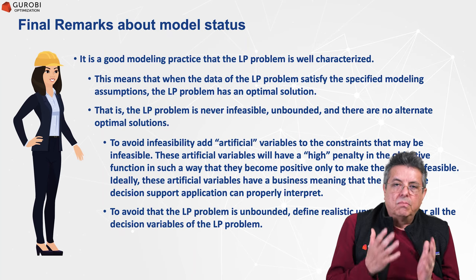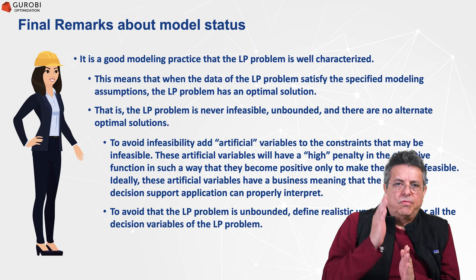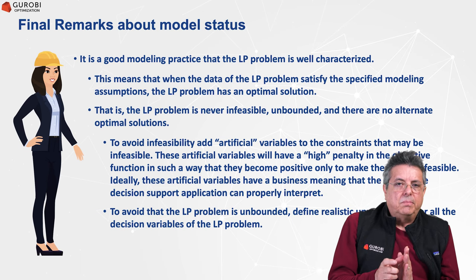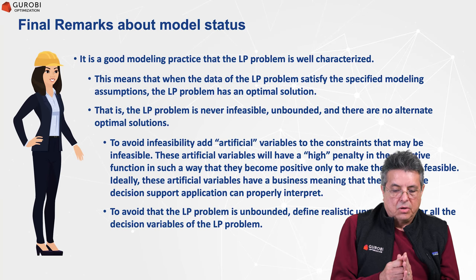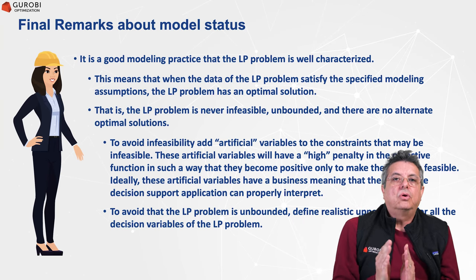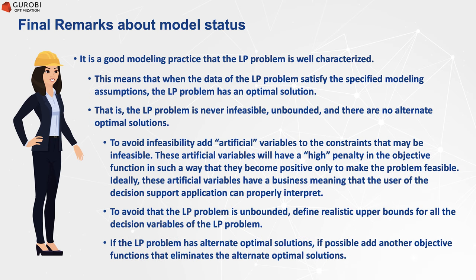To avoid an unbounded problem, define an upper bound for each decision variable, since realistically no decision variable can take an arbitrarily large value. To avoid alternative solutions, define an additional objective to filter among multiple optimal solutions, adding more objectives to progressively narrow down to a single solution that optimizes several criteria.